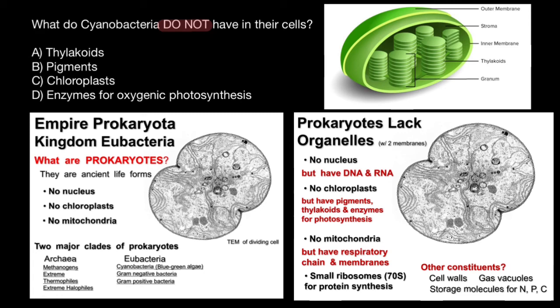Now we can choose the correct answer. Cyanobacteria do have thylakoids, do have pigments, and do have enzymes for oxygenic photosynthesis, but they lack chloroplasts. So that is going to be our answer. And that's all for today — subscribe and see you in the next video. Goodbye.